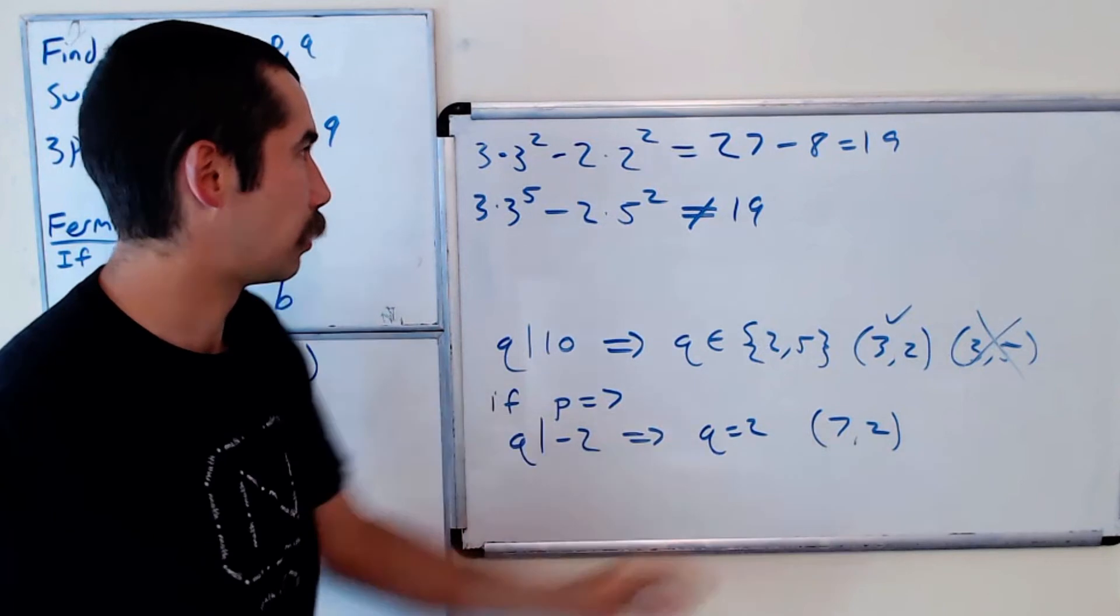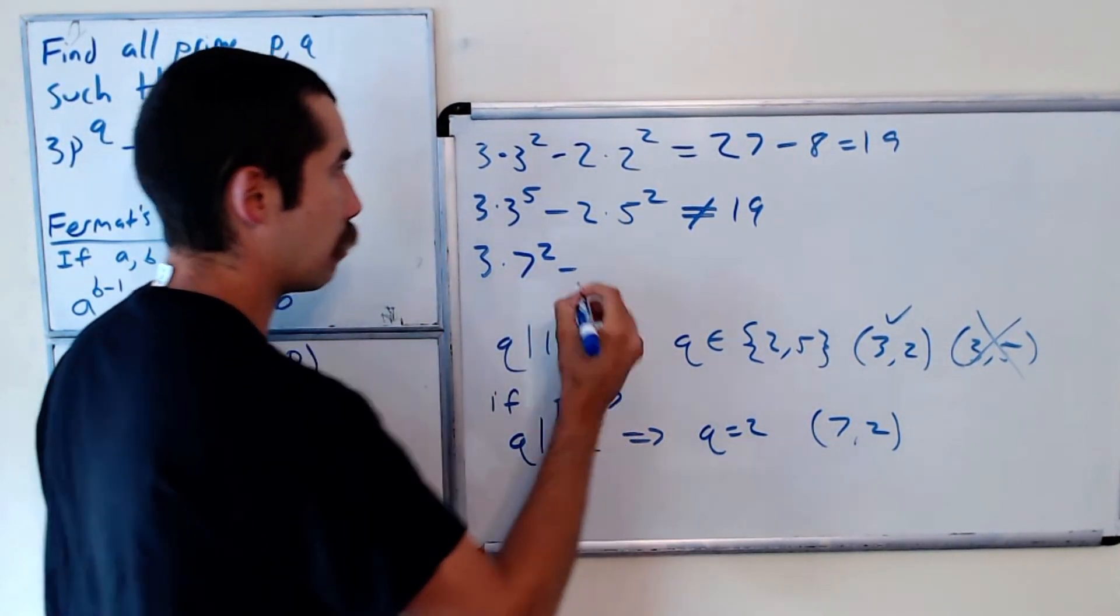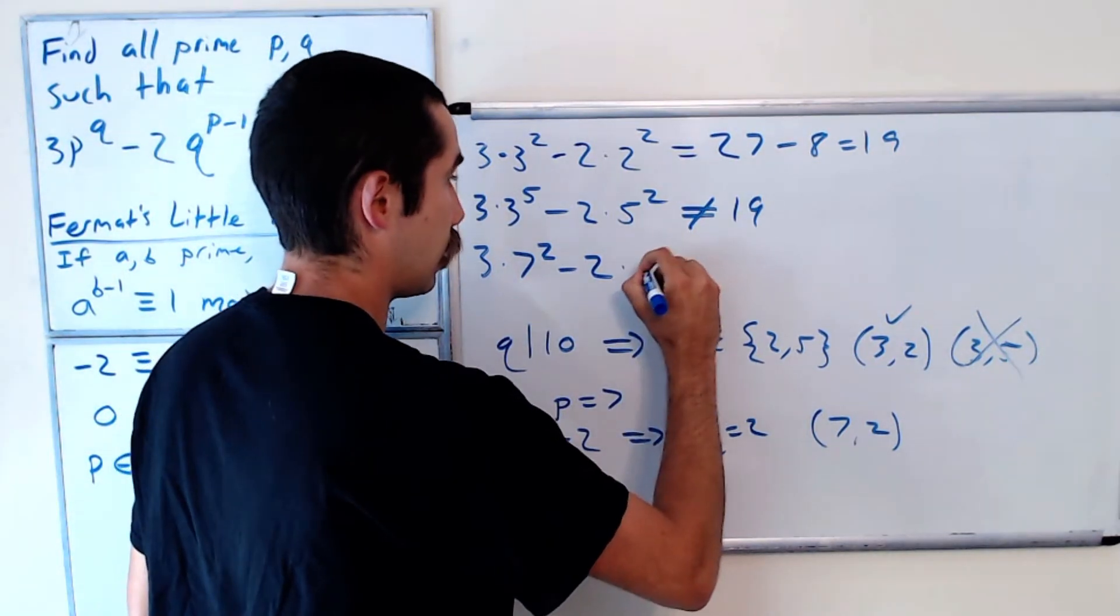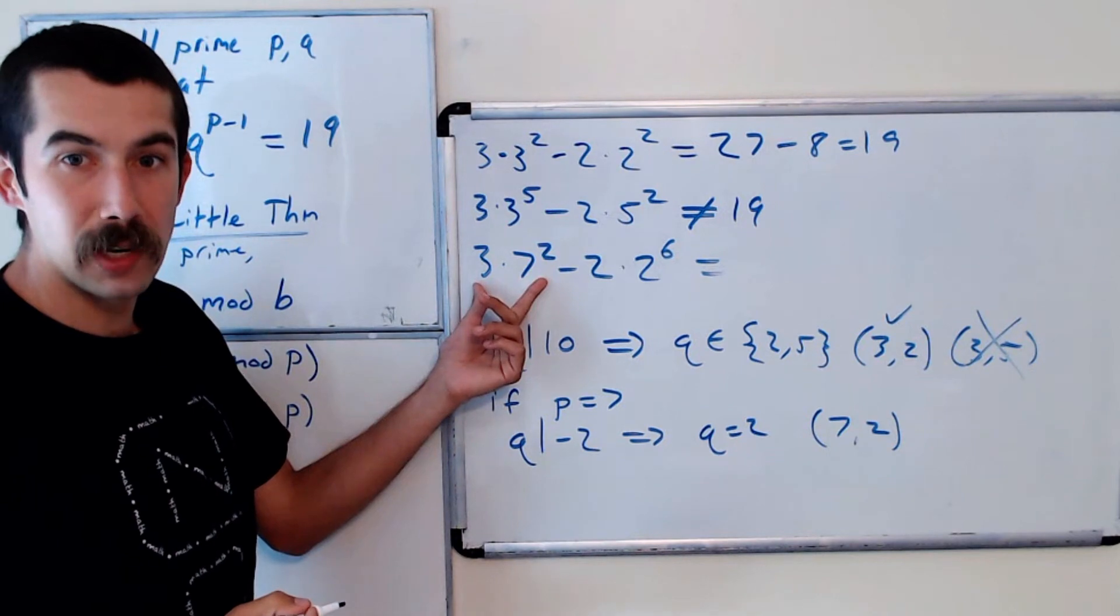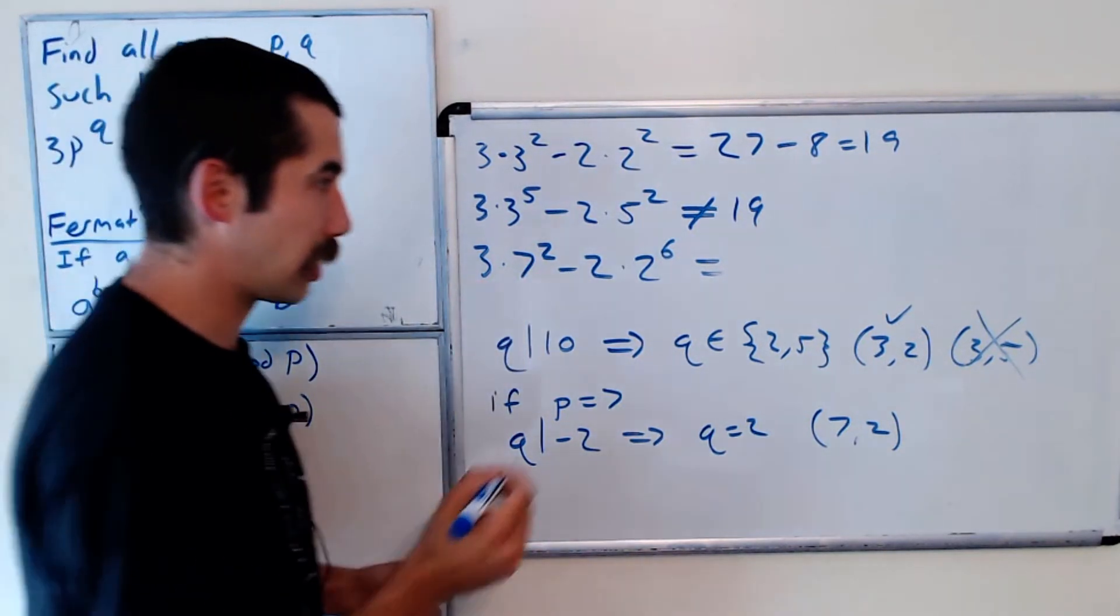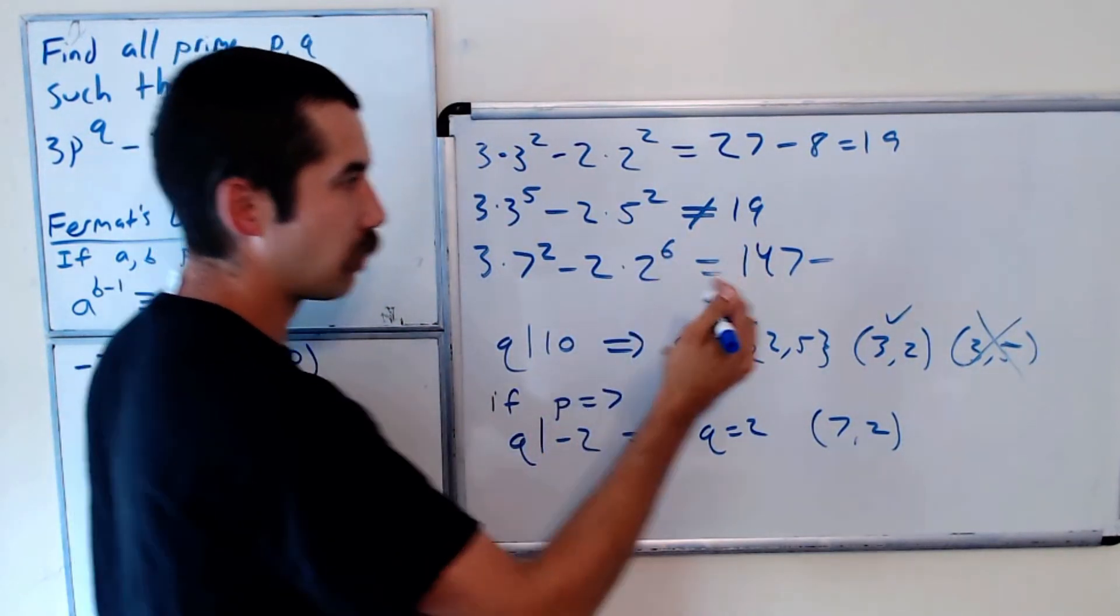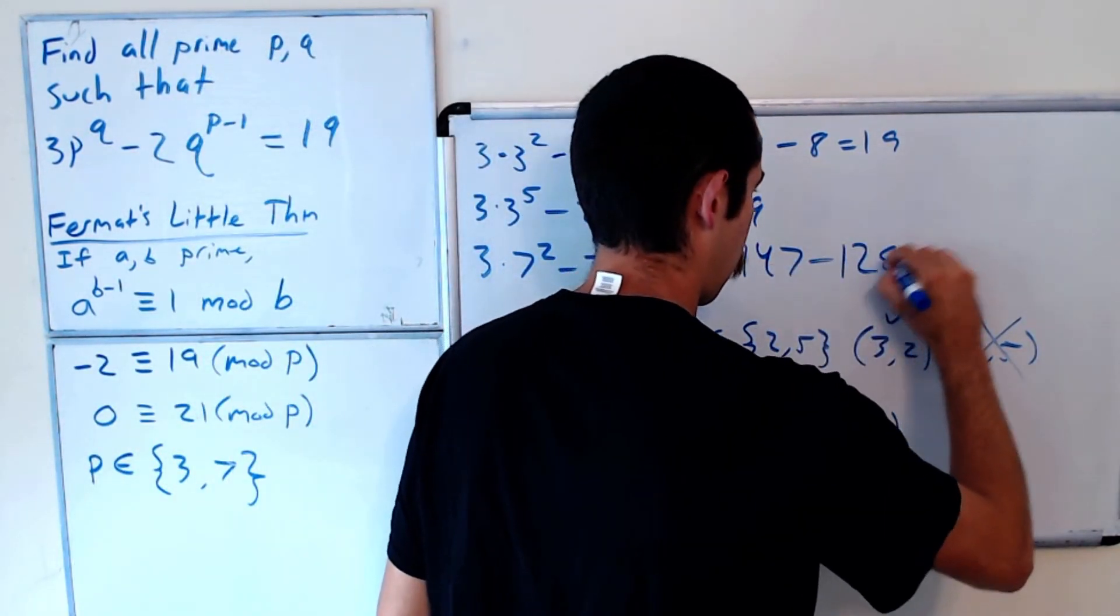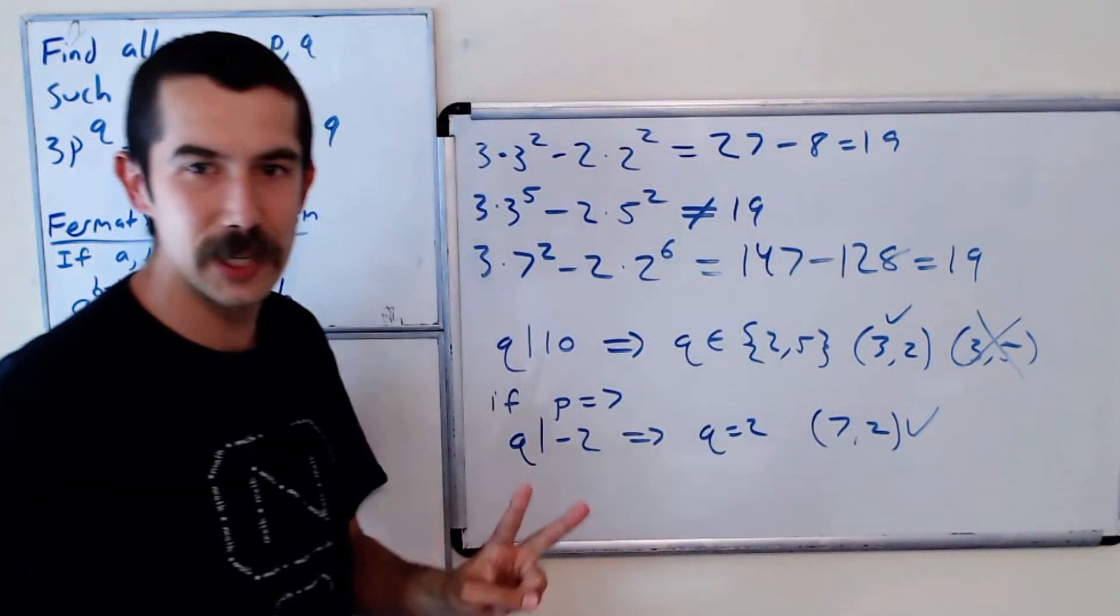And then we want to check this one as well. So 3 times 7^2 minus 2 times 2^7. Well that's 49 times 3, which is 147 minus, this is 2^7, which is 128, which is equal to 19. So this is also an answer.